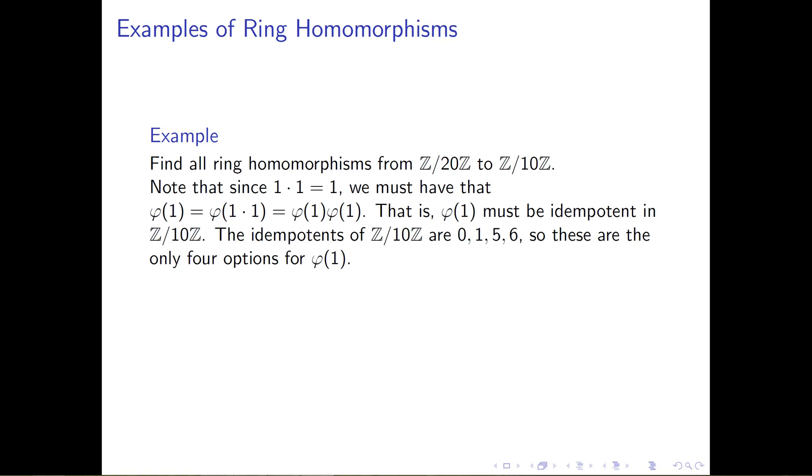So what we're saying is, if we have a map, φ, from ℤ mod 20 to ℤ mod 10, and we're looking at where should we send the number 1, where should we send the unity, we need to send it to an idempotent element of ℤ mod 10.